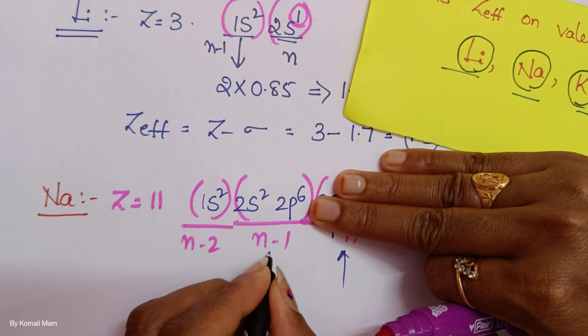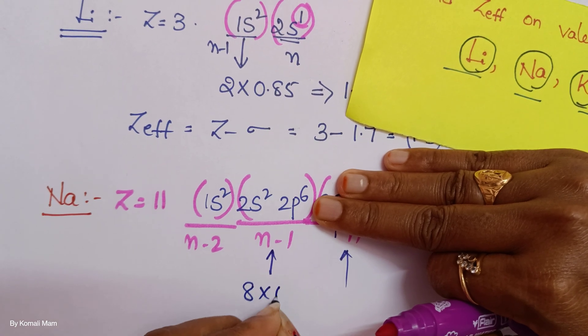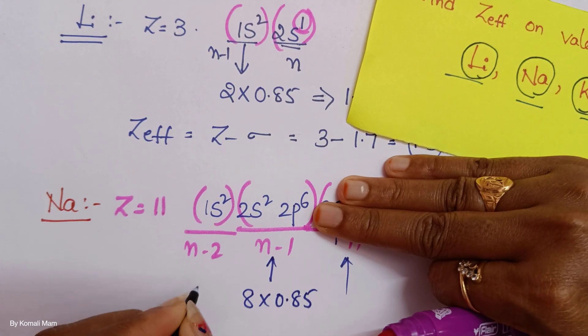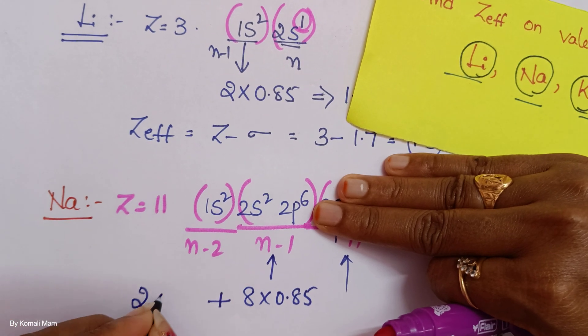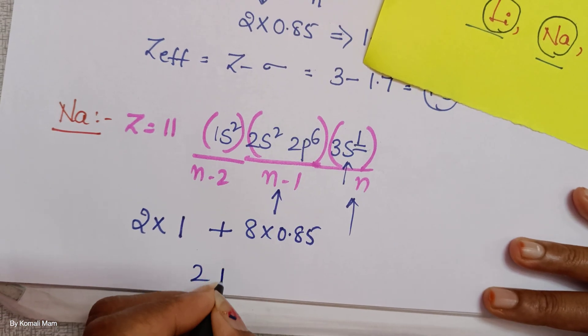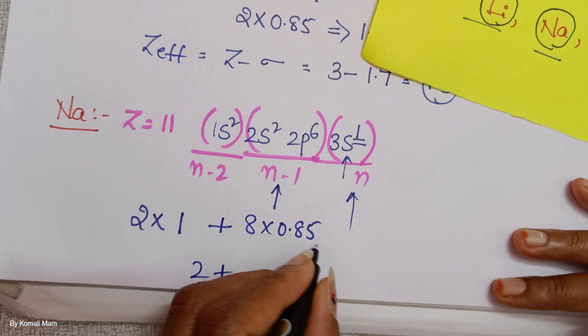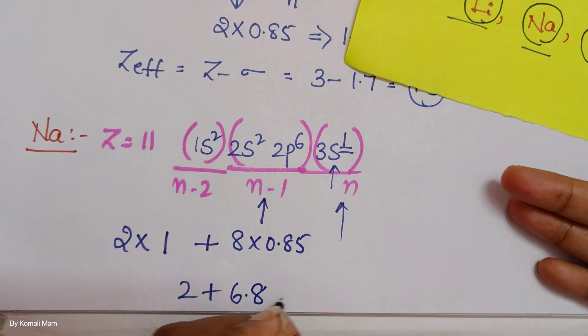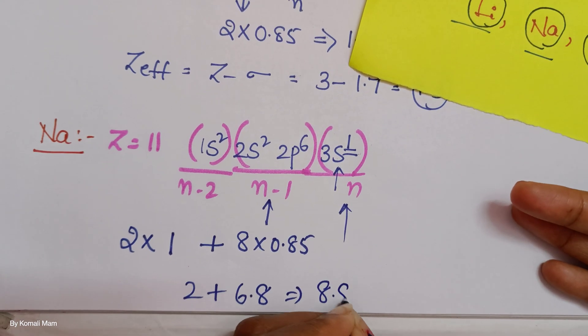Here 8 are left. So 8 into each one contribution is 0.85 plus here 2 electrons are in N minus 2, so its value is 2.